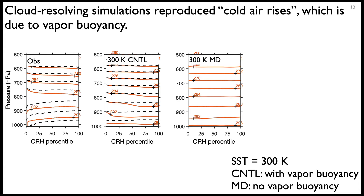Now let's see what happens once we remove the vapor buoyancy and whether self-aggregation reproduces observed features. Here is the temperature and virtual temperature plot — first from observation, then from the control simulation. The control simulation roughly reproduces what we see: flat virtual temperature and tilted temperature. In the mechanism denial experiment, temperature in red is horizontally uniform. This really supports our hypothesis that vapor buoyancy makes cold air rise. To be more quantitative: based on the equation buoyancy = thermal buoyancy + vapor buoyancy, and assuming no horizontal buoyancy gradient in the tropics, we can derive the horizontal temperature difference due to vapor buoyancy.